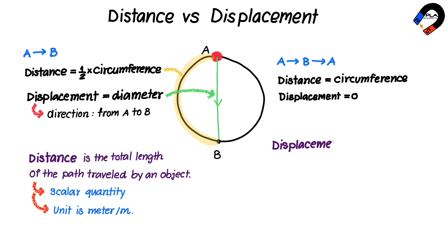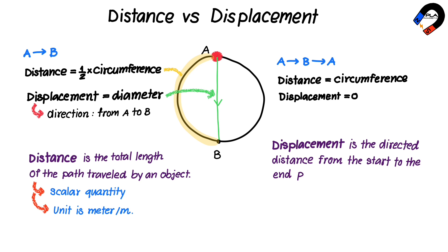However, displacement is the directed distance from the start to the end points. Displacement is a vector quantity, which means that it has both magnitude and direction. Its unit is meter.